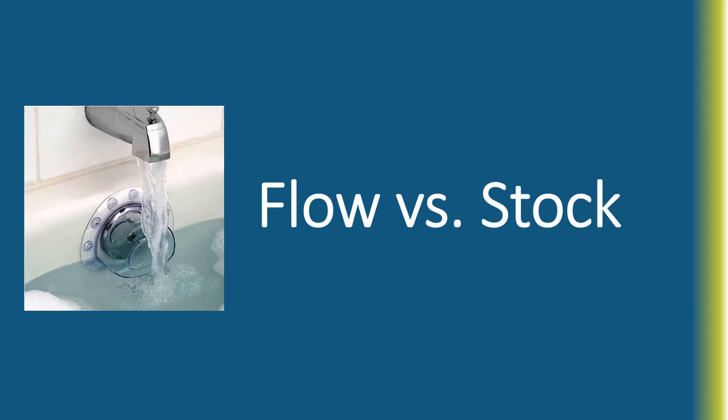A stock is a quantity measured at a given point in time — how much is already in the tub. Whereas a flow is what GDP is all about. A flow is a measure of a quantity during a certain time period — how much is flowing out of that faucet and being added to the stock?